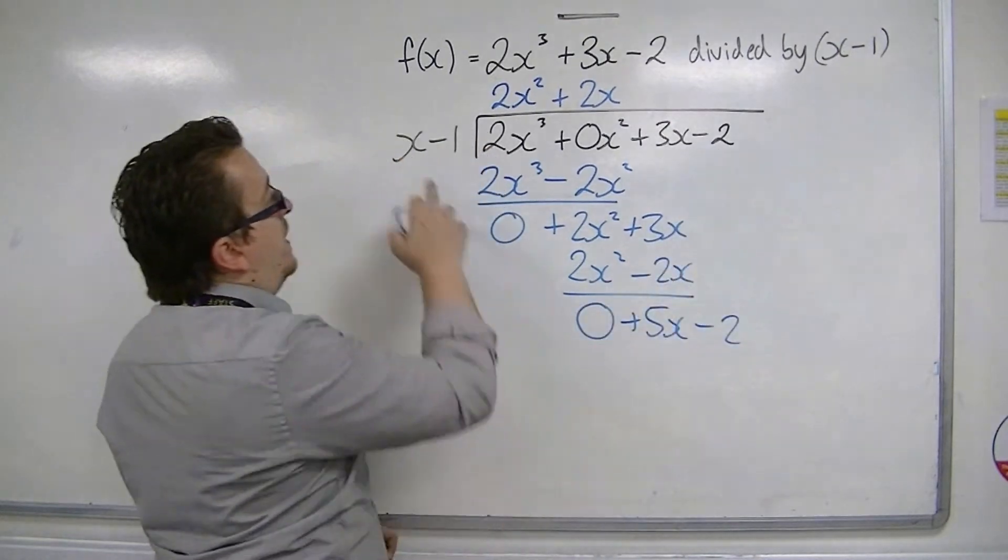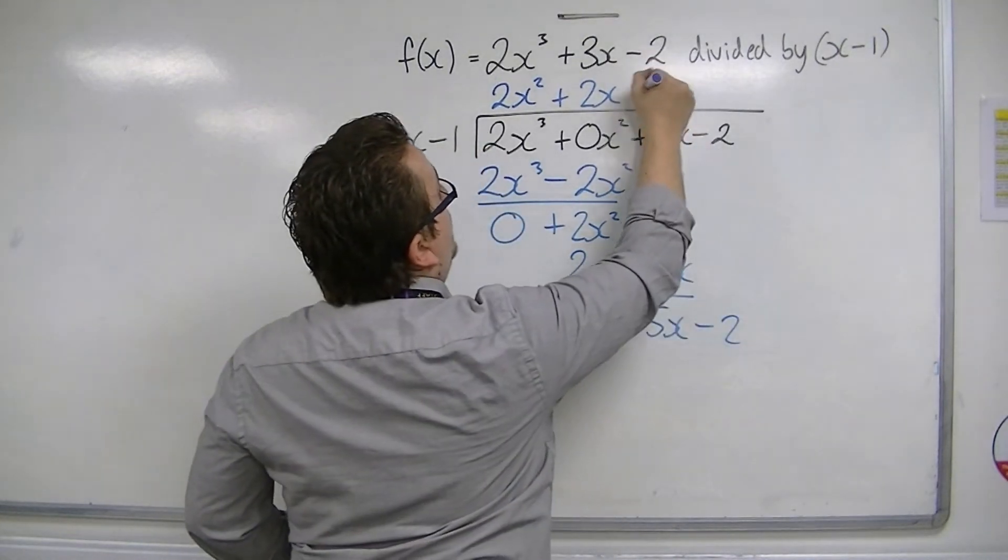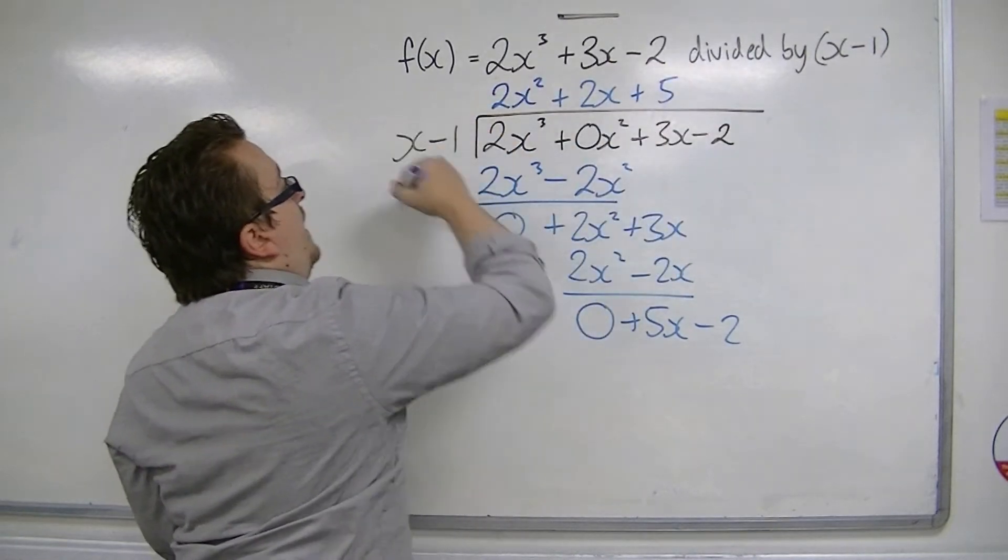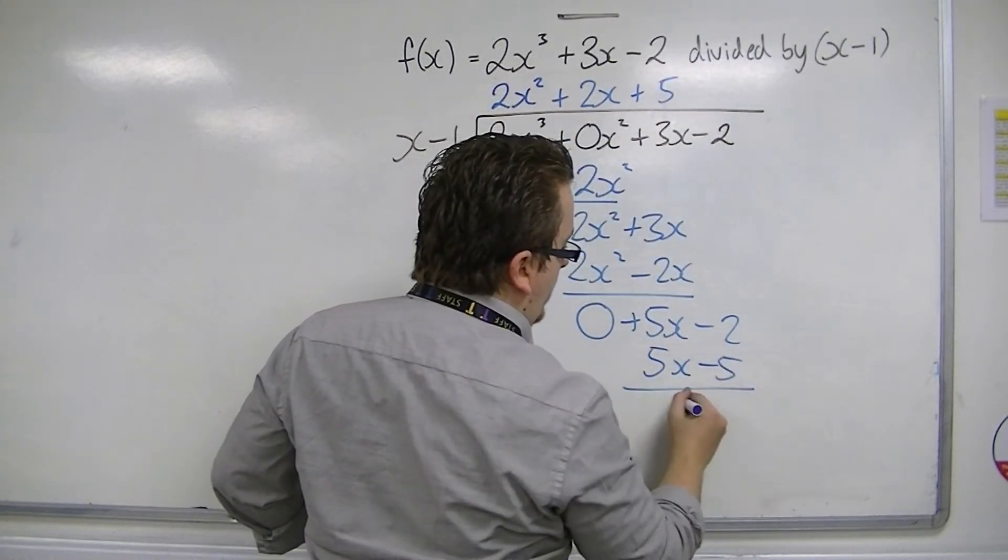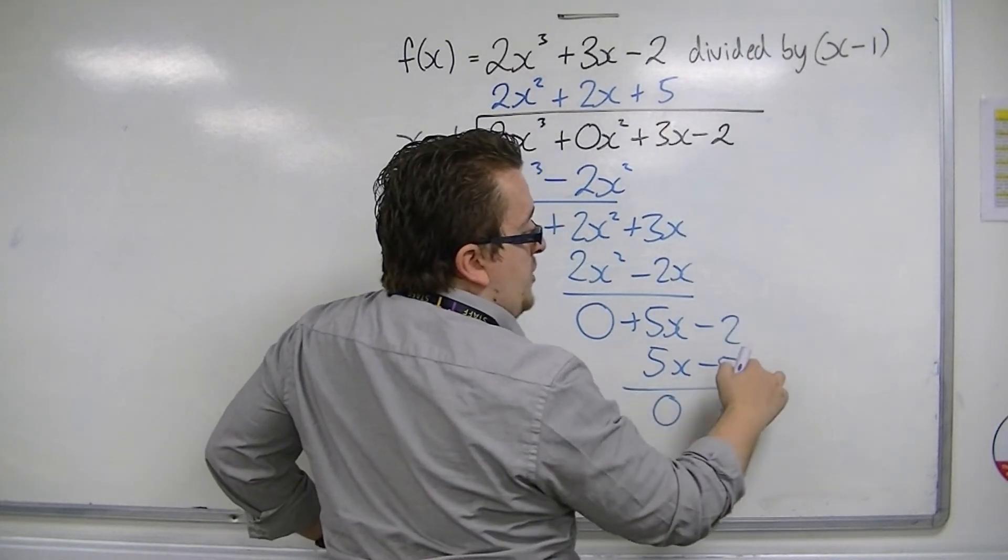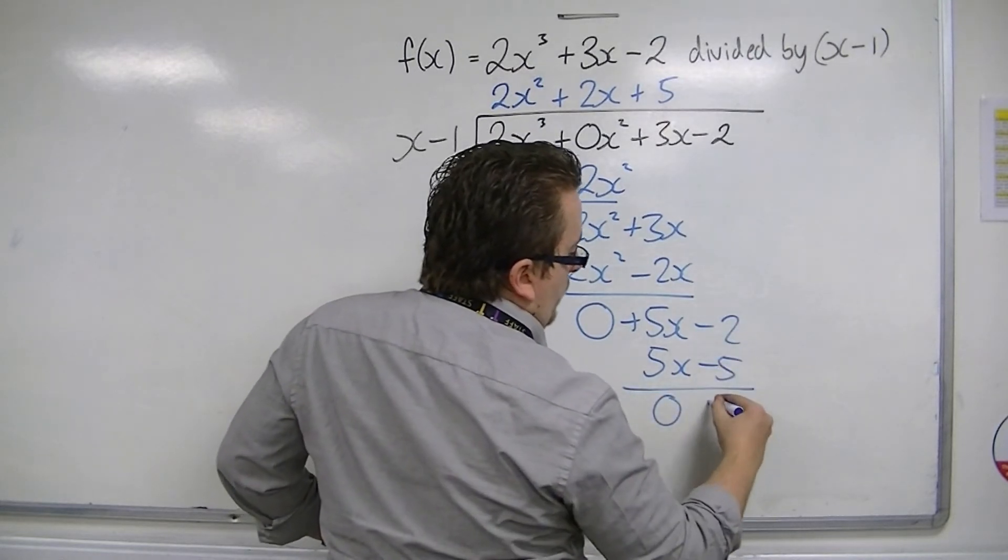Bring the minus 2 down. x is into 5x, go 5. 5 lots of x minus 1 is 5x minus 5. So we get 0, minus 2 take away minus 5 is 3.